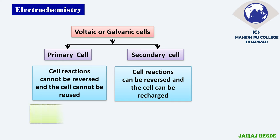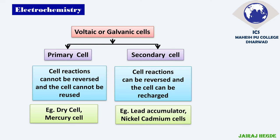Let us find the examples. For primary cells, the examples are dry cell — which we usually use for remote controls and tape recorders — and mercury cell, which we usually use in watches, mics, and earphones. The secondary cells include the lead battery, a wet battery which we use in vehicles, and nickel cadmium cells. We also have mobile batteries like lithium ion and lithium polymer batteries — these are secondary cells which can be used again and again by recharging.